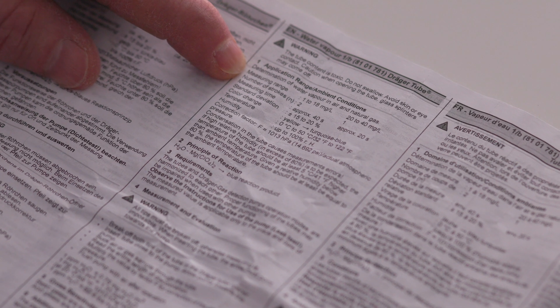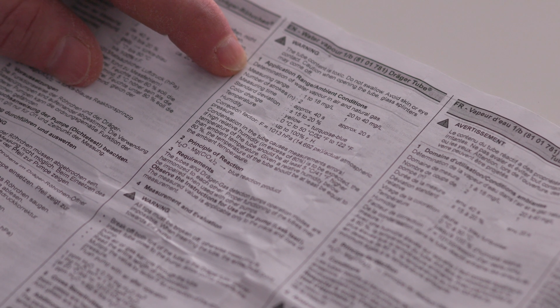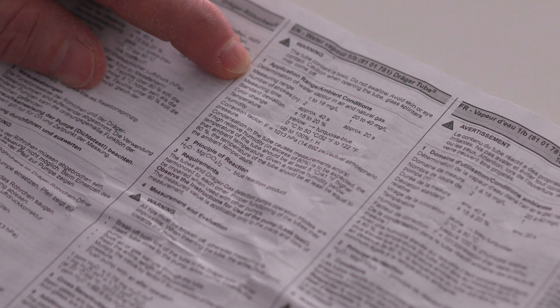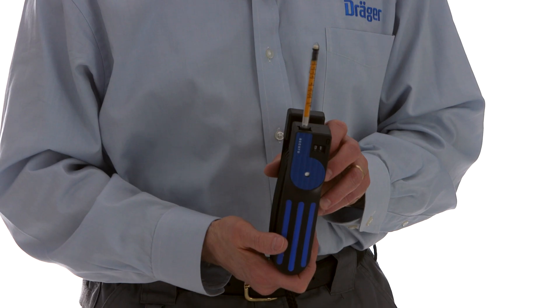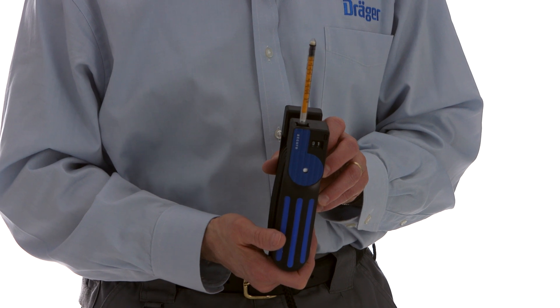Take the required number of strokes according to the instruction sheet in the package. This tube has a high range scale based on n equal one stroke and a low range based on n equal two strokes. This means that if the discoloration reaches the high range with one stroke, read the tube. But if not, take one additional stroke and read the low range scale.